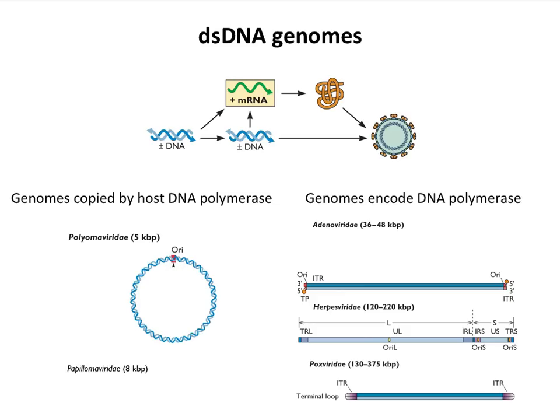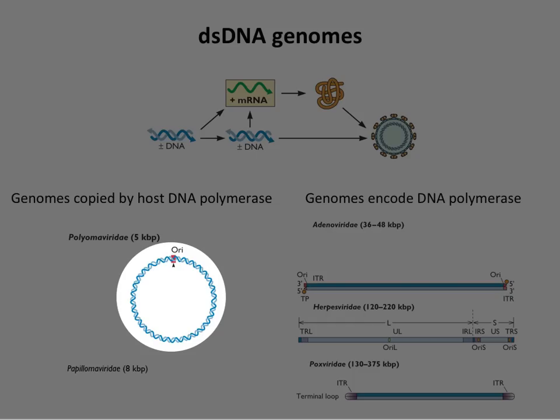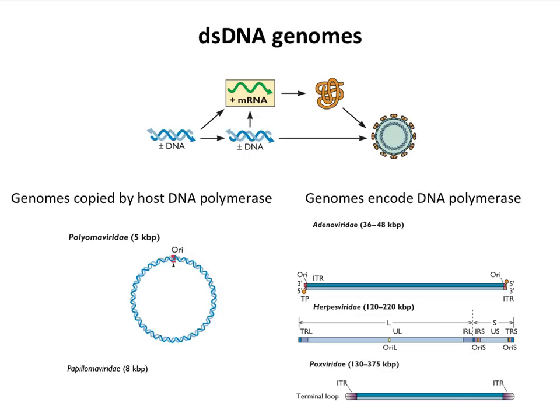The two smaller DNA virus genomes — polyomaviruses and papillomaviruses — are five kilobases and eight kilobases long. These are double-stranded circles of DNA: covalently closed, twisted, super-coiled. They don't encode a lot of proteins, and they're typically copied by host DNA polymerase, because they don't have enough room to encode DNA polymerase and all the proteins you need. They do encode at least one protein that modifies the DNA machinery. These smaller viruses use the host DNA replication and transcriptional machinery — they use Pol II to make mRNA.